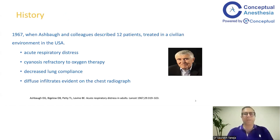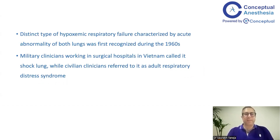It all started in 1967 when Dr. Ashbaugh and his colleagues described 12 patients treated in a civilian environment in the USA. All 12 presented with acute respiratory distress, cyanosis refractory to initial oxygen therapy, decreased lung compliance, and bilateral diffuse infiltrates on chest radiograph. It was initially called 'shock lung' in Vietnam surgical hospitals, while in medical facilities it was referred to as Adult Respiratory Distress Syndrome.